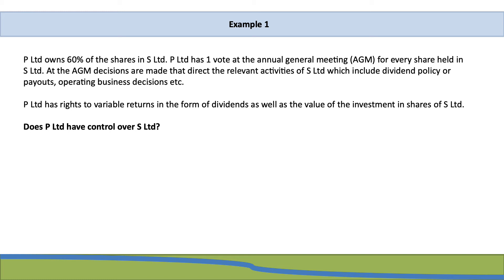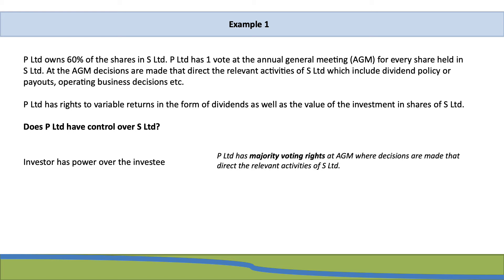Looking at the first requirement — does the investor have power? P Limited owns 60% of the shares in S Limited and therefore has majority voting rights at the AGM where decisions directing relevant activities are made. Therefore P Limited has power over S Limited. Note that power is based on having majority voting rights, not merely share ownership — for example, if P Limited owned only 40% of shares but held majority voting rights at the directors' meeting due to appointed directors, it would still have power.